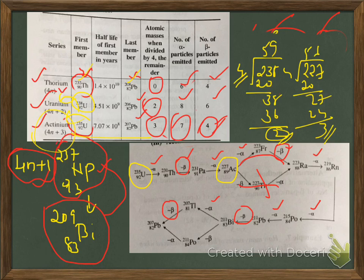In addition to the names thorium, uranium, actinium, and neptunium series, they also have the general names 4n, 4n+2, 4n+3, and 4n+1 respectively. With this we come to the end of radioactive disintegration series. Thank you, friends.